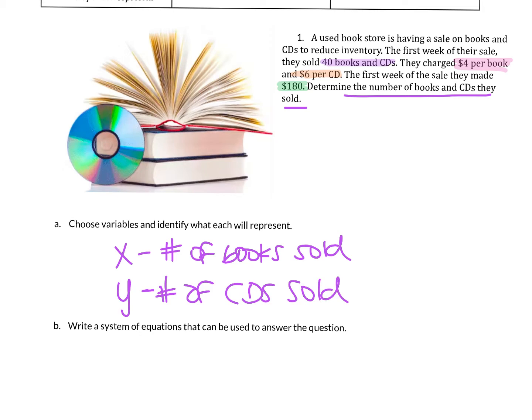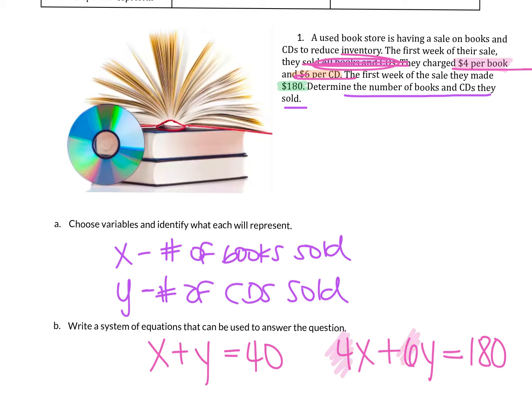We have to write our system. We're thinking about books and CDs with 40 total. So the number of books sold and the number of CDs sold equaled 40 items. Then it's $4 per book and $6 per CD, and all together it was $180. When we write these equations you want the same labels on the numbers you're using. So we had dollars, dollars, and $180. So I know I have my two equations correct and there's my system.